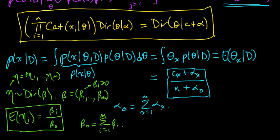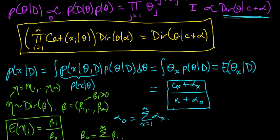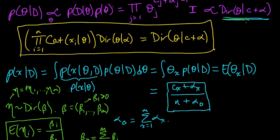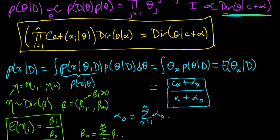And the posterior distribution, we saw, is a Dirichlet with parameter c plus alpha. So the expected value of theta under this, or of theta x under this posterior distribution, we can just use this formula here. And the parameter for the posterior distribution, if we called it beta, so if we called beta c plus alpha,